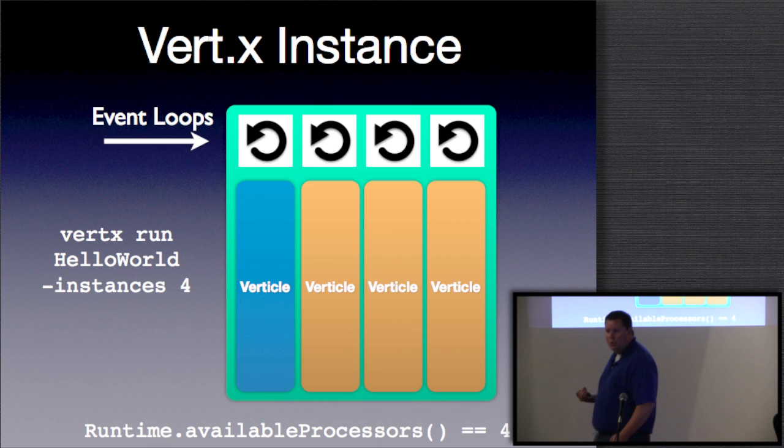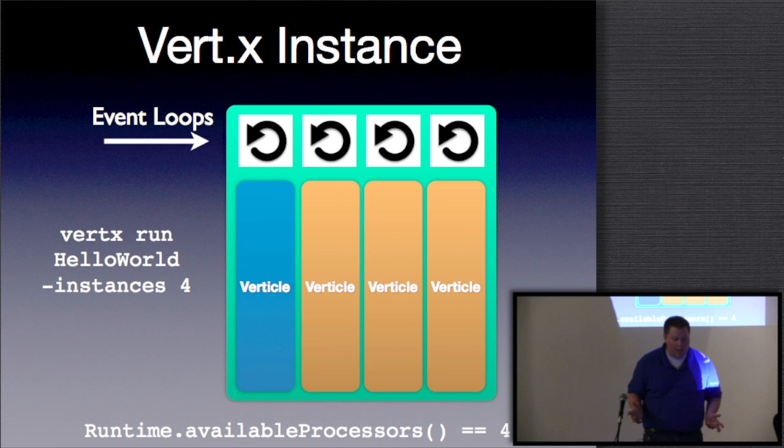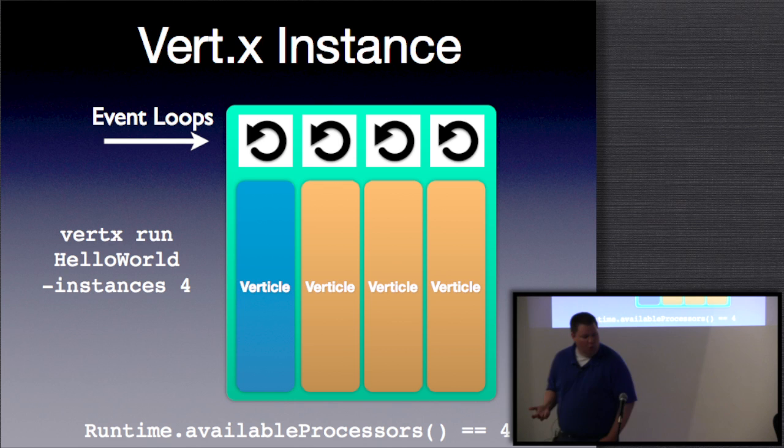If you run Vert.x with the command-line argument `instances` set equal to the number of cores, you'll see the Verticle automatically scaled out to one instance per core. Of course you can run more instances than you have cores, because each instance is typically not going to be able to keep the core busy all by itself.